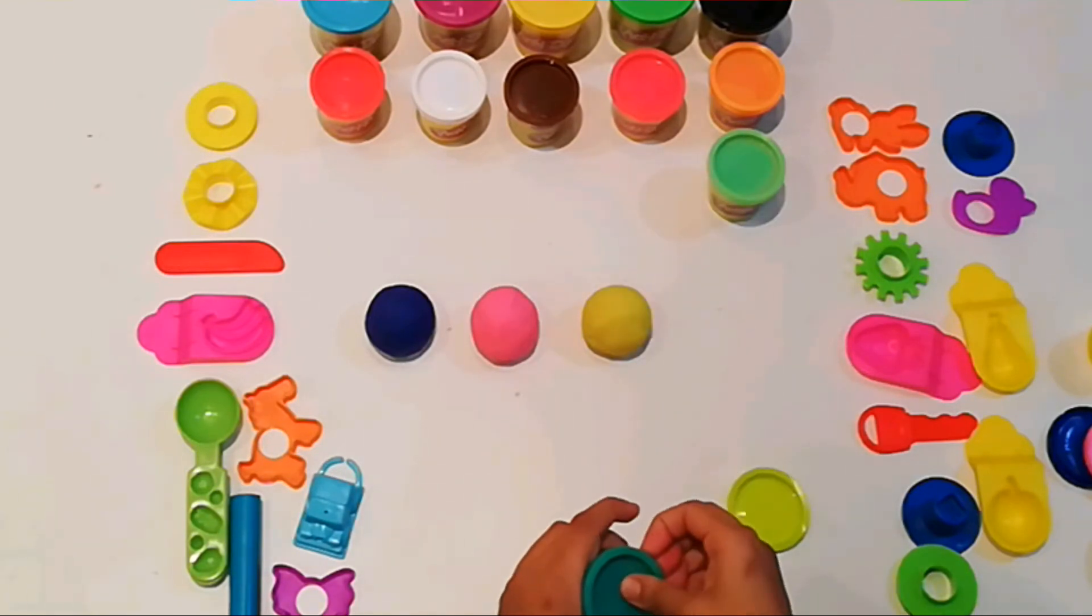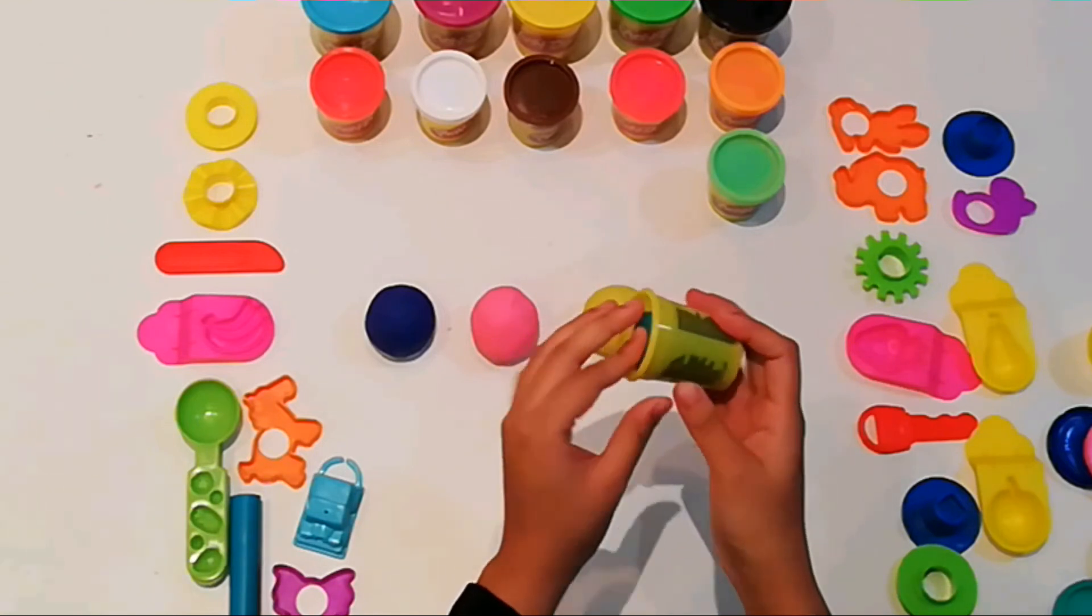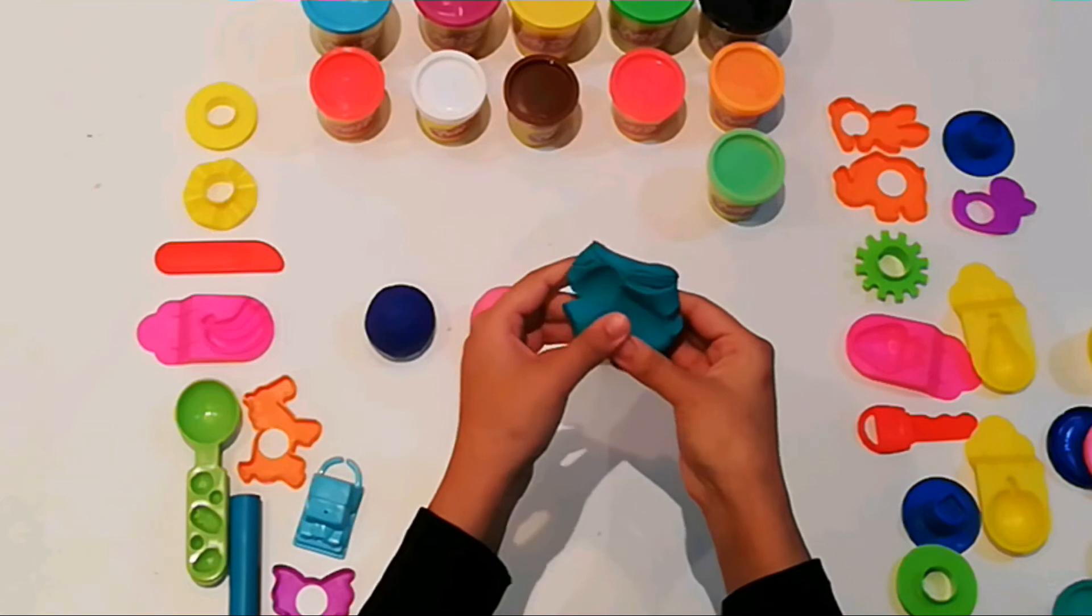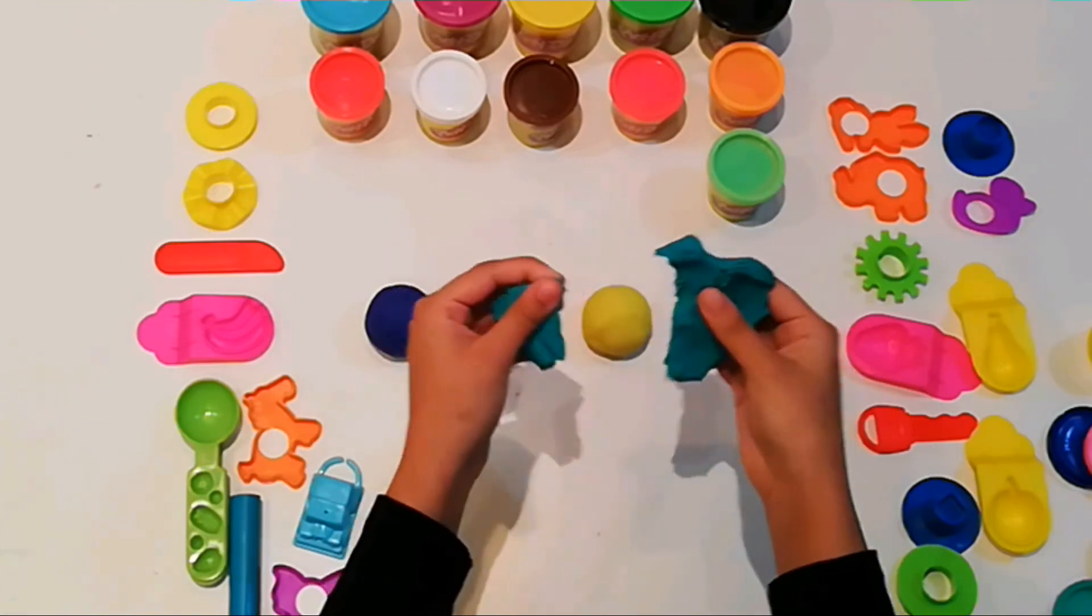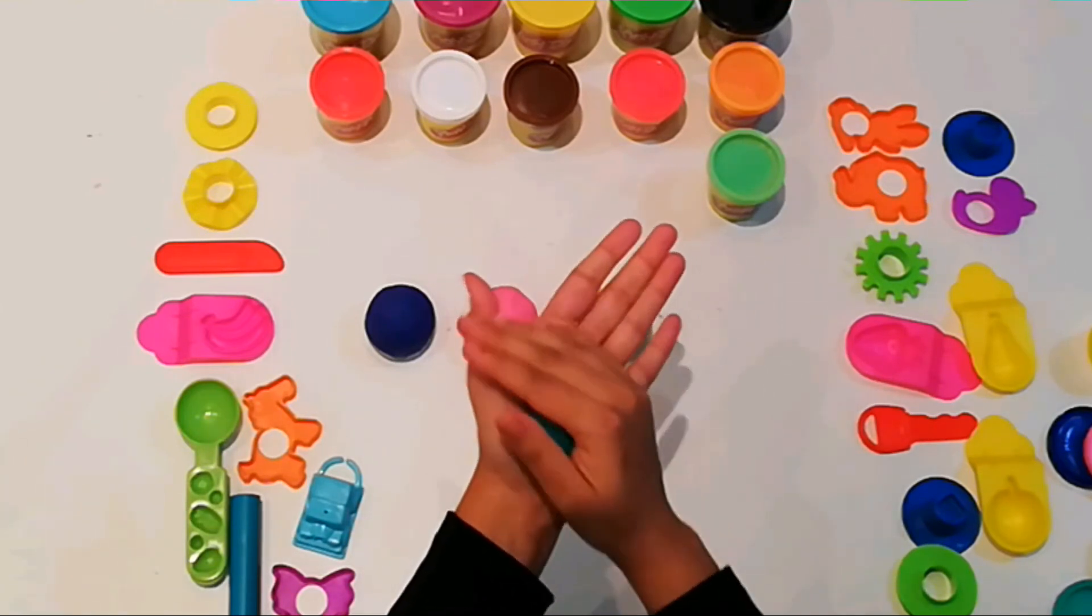Now number four. This is a green, a sage green they call it. Let's take this out of the tub. There we go, that was nice and easy. Squish it a little bit. This is so much fun. Oopsie, I dropped a bit. Pick that up.